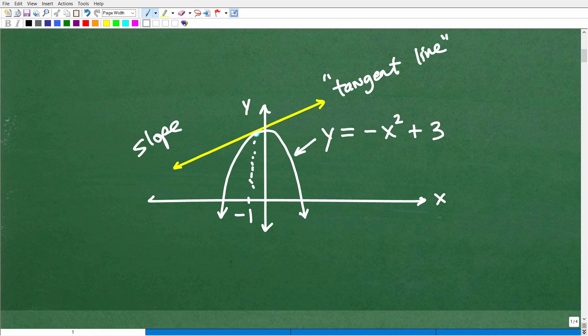Let's suppose I wanted to find the slope of this tangent line where it's touching the parabola right at this negative one point, negative one on the x-axis. So right there, if I wanted you to say, hey, what's the slope of this line? How can we find this slope or the angle of this line?